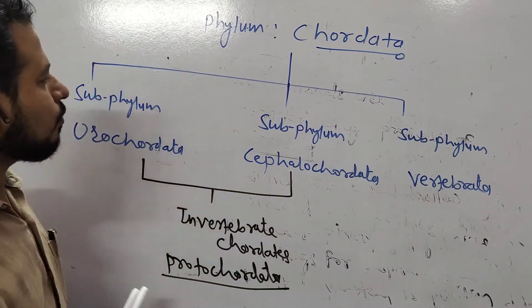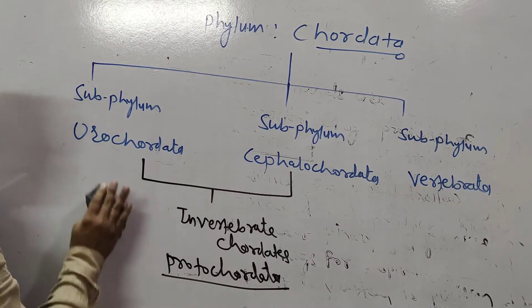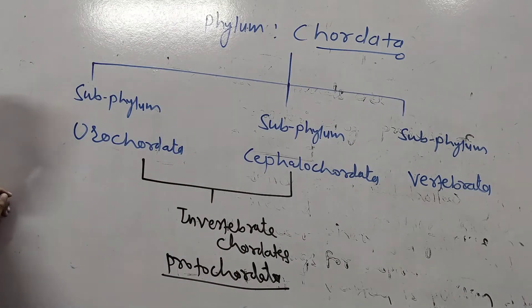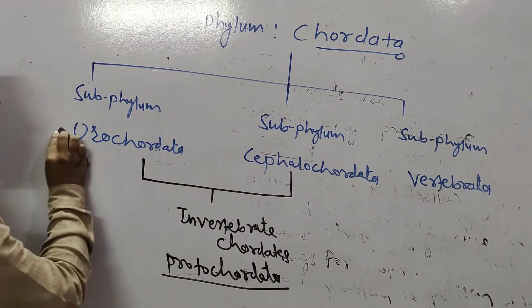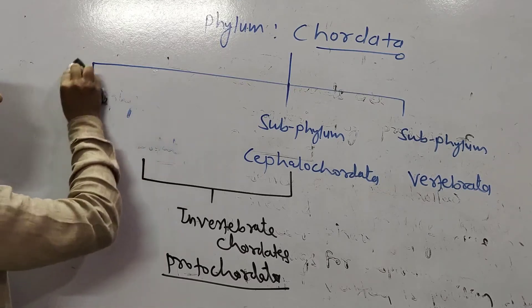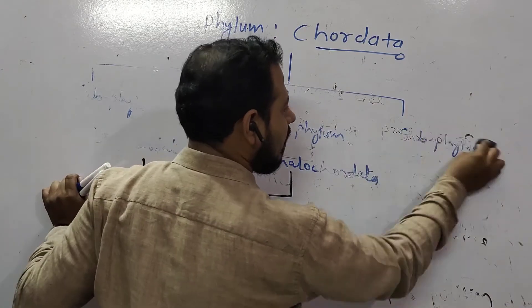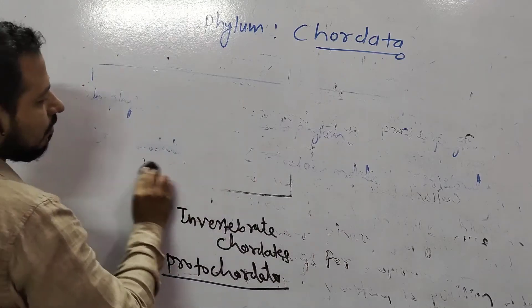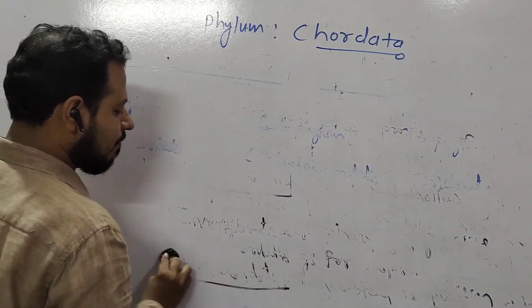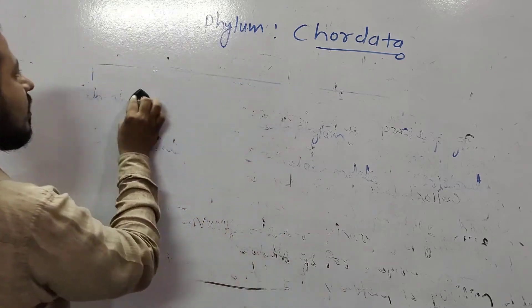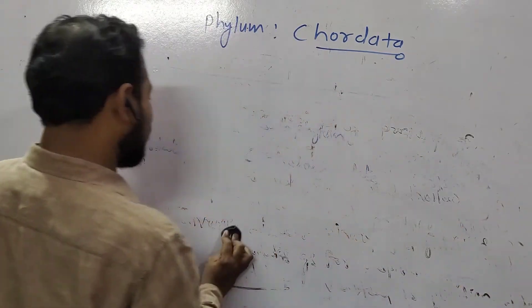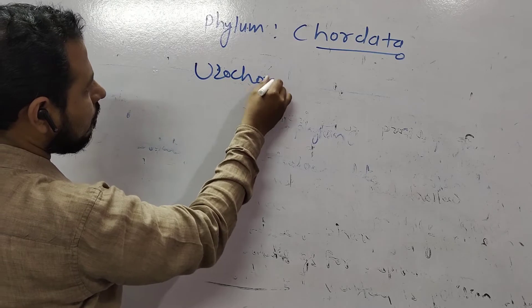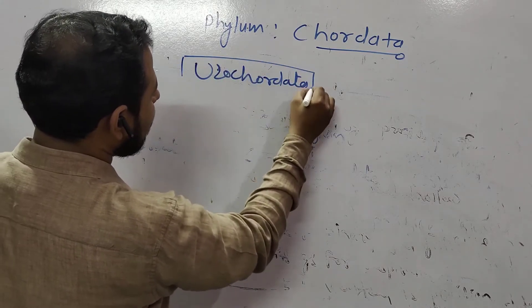Phylum Chordata is classified into subphylum Urochordata, Cephalochordata, and Vertebrata. Invertebrate chordates are also called Protocordates. We are going to study Urochordata and Cephalochordata first, then move on to Vertebrata.